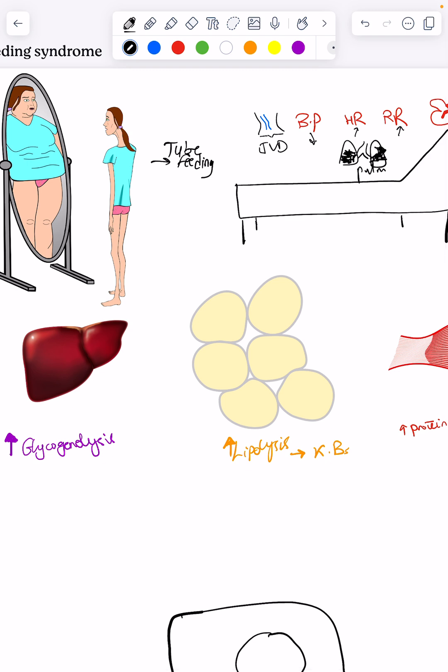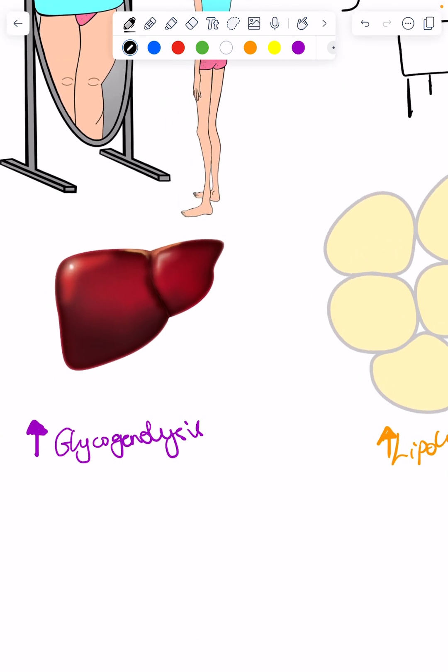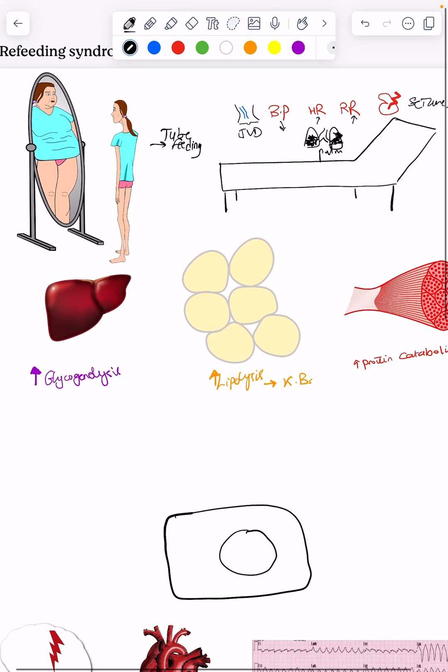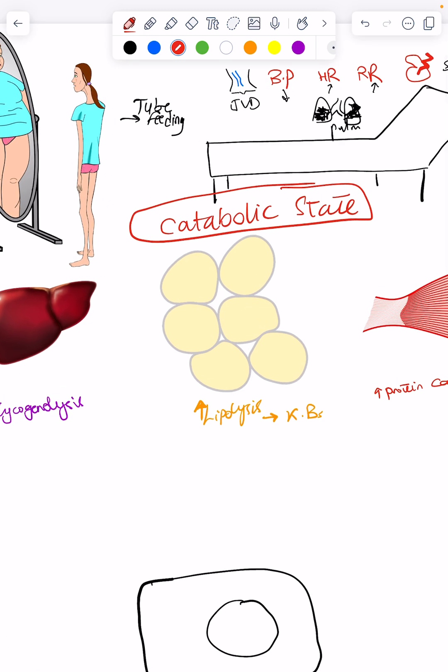So during starvation mode when she was anorexic, she was in some sort of a catabolic state. The catabolic state is characterized by an increase in catabolic hormones, mainly glucagon and cortisol. Those break down sources of energy, they keep breaking down your stores in order to produce energy.